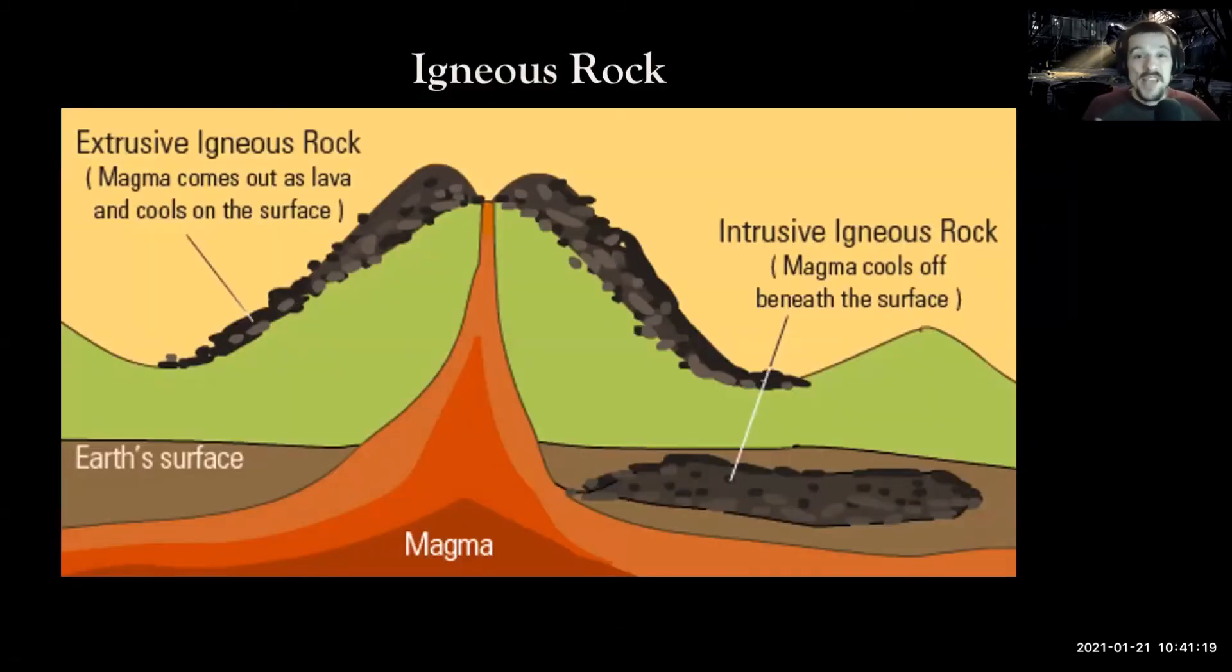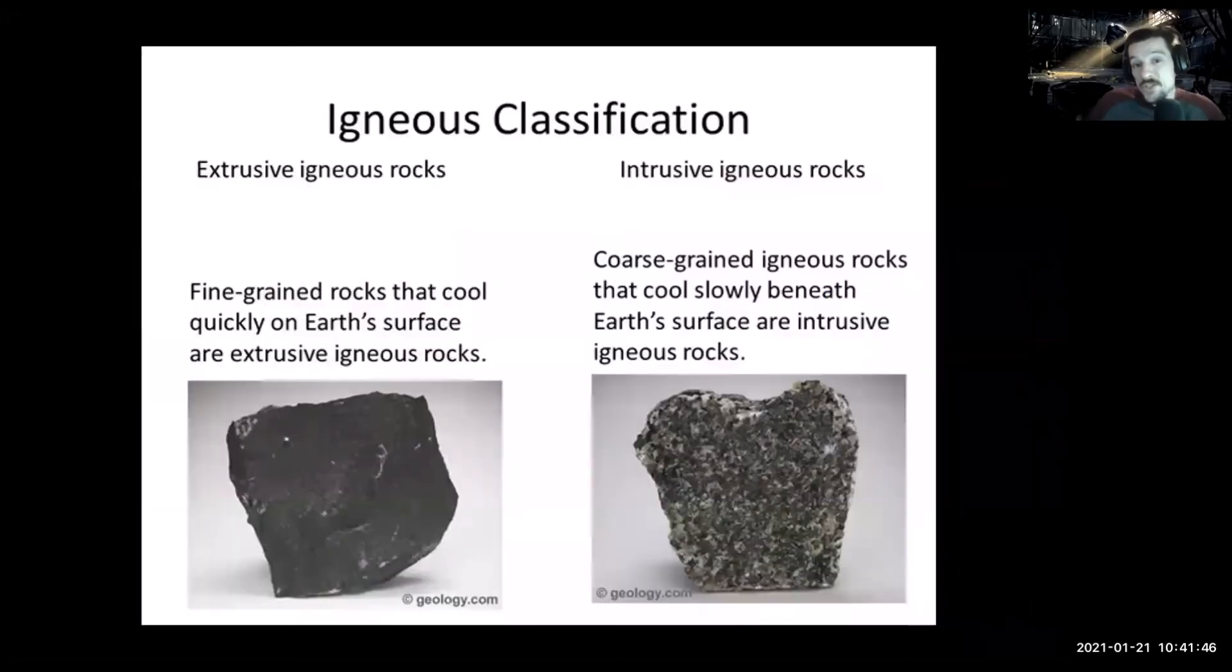Speaking of igneous rocks, there's extrusive igneous and intrusive igneous. Extrusive rocks are found on the outside of the earth, intrusive rocks cool down inside of the earth, and this causes a major difference. Extrusive rocks are going to be fine-grained because they cooled quickly, whereas intrusive rocks are going to be coarse-grained or have big crystals because they cooled down slowly. If we look over at the image, we can see the rock on the left, we can barely see any crystals, but the rock on the right has nice big crystals. So the rock on the right obviously cooled slowly in the ground, intrusive, whereas the rock on the left cooled fast outside the ground, extrusive.